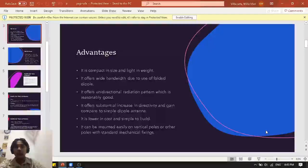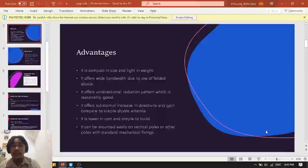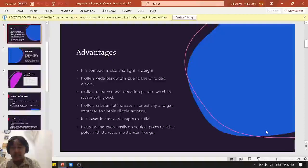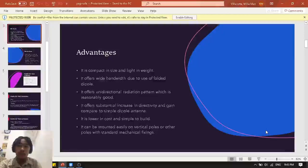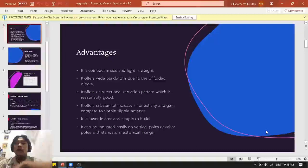Okay, so advantages. First, it is compact in size and it is lightweight. It's because of the design and the materials that is used in the antenna. The antenna is built mostly with aluminum tubes that makes it light.